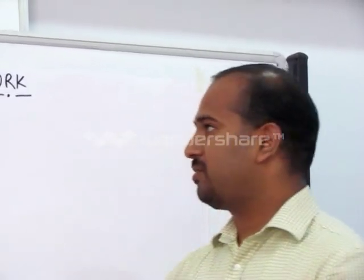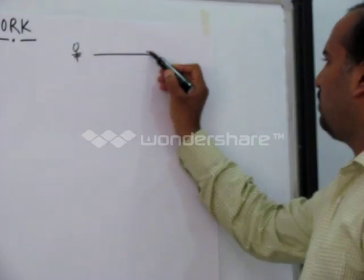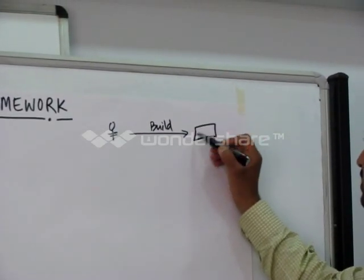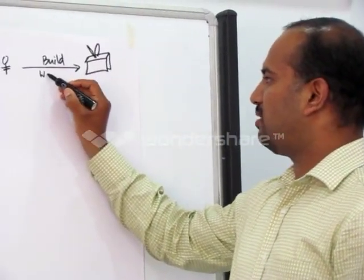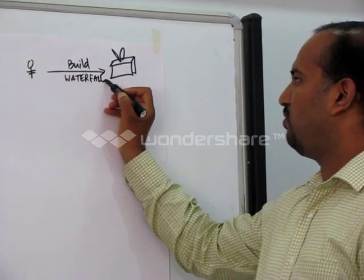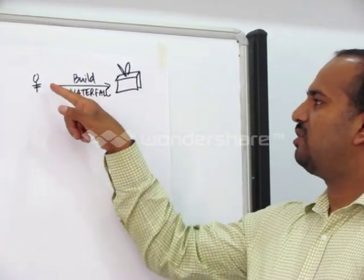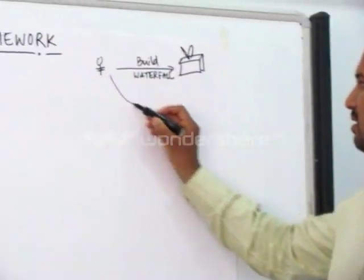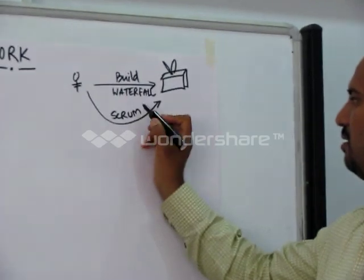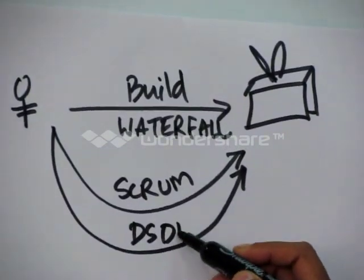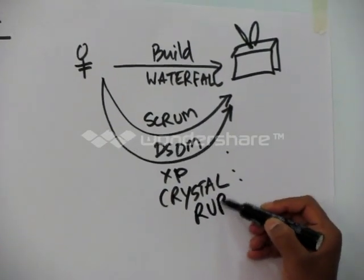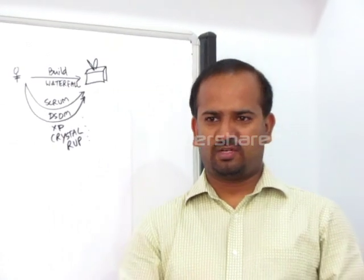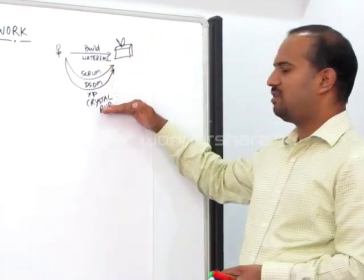Similarly, if you have to reach your goal — for example, you want to build the winning product — one way is waterfall, which is also called the traditional method. Similarly, we have Scrum, DSDM, XP, Crystal. All these are different ways of reaching your dream, similar to a bus journey, train journey, driving a car, or even walking. Each one is a way to reach your goal.